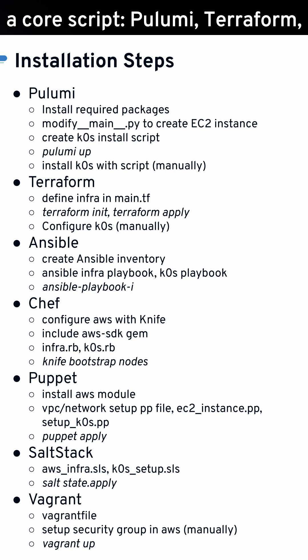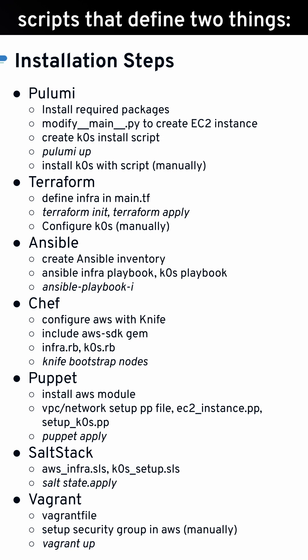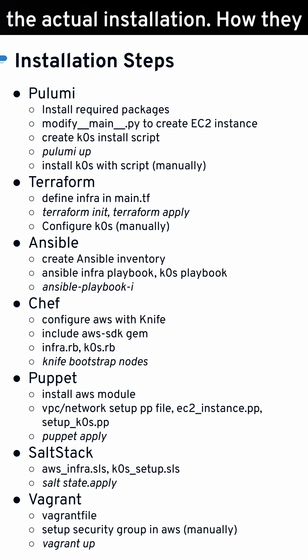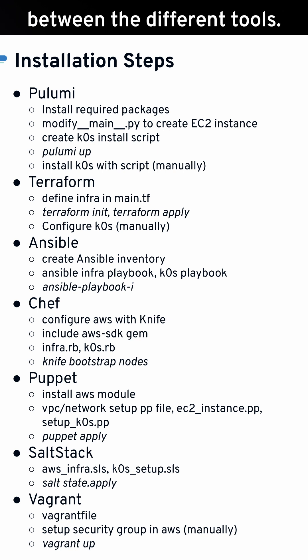Most of them essentially require you to have a core script. Pulumi, Terraform, Ansible, Chef, Puppet — all of them have a series of core scripts that define two things: one, your infrastructure, such as the EC2 instances, and two, the actual installation. How they're broken up is slightly varied between the different tools.